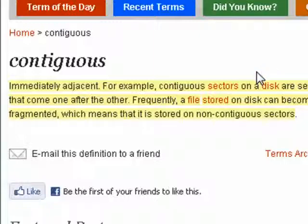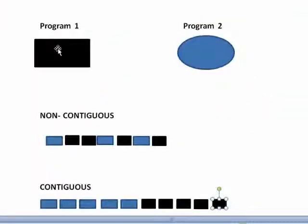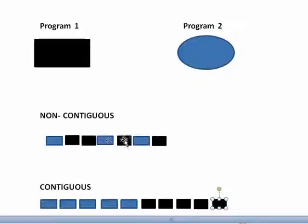It means they're right next to each other. Now, over time, deleting programs, adding programs, increasing the size of files, decreasing the size of files, your hard drive gets fragmented. So this is program one in black, program two in blue. When it's non-contiguous, you get parts of program two laid out in different spots and parts of program one in different spots — they went into the only spots that were available.